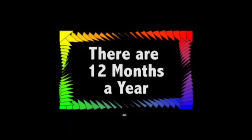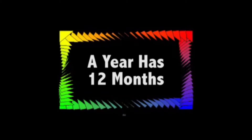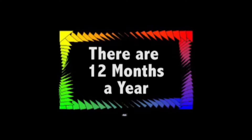January, February, March, April, May, June, July, August, September, October, November, December — the 12 months in a year. A year has 12 months, there's 12 months in a year.